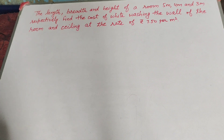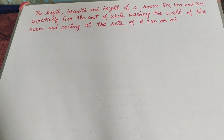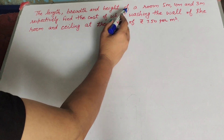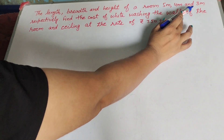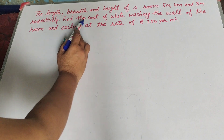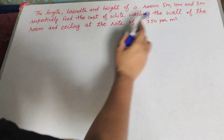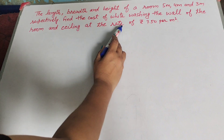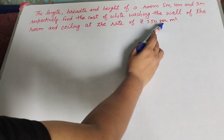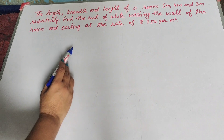Hello friends, welcome to my channel. In this video we discuss: the length, breadth and height of a room is 5 meter, 4 meter and 3 meter respectively. Find the cost of whitewashing the walls of the room and ceiling at the rate of rupees 7.50 per meter square.